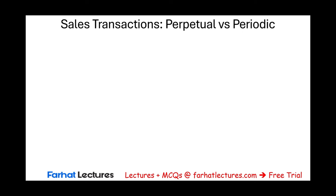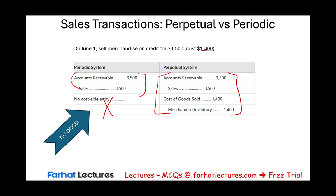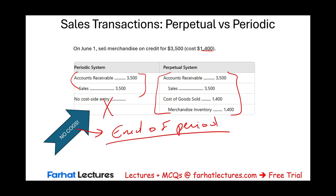Let's compare sales transactions side by side. On June 1st, we sold merchandise worth $3,500, cost $1,400. Under the perpetual system, you debit accounts receivable and credit sales, and also record cost of goods sold. Under the periodic system, you debit accounts receivable and credit sales — same thing — except we don't keep track of cost of goods sold. We compute cost of goods sold at the end of the period. This is a disadvantage — managers, investors, and owners want to know costs in real time.